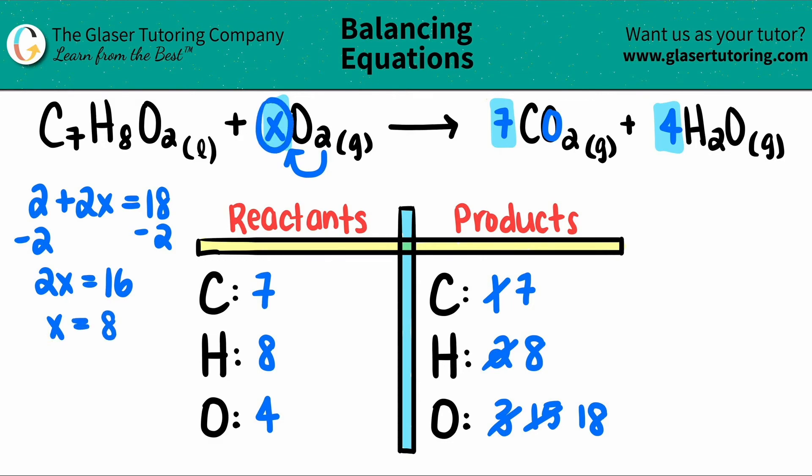That's the number that goes here. So if I just erase this and I put my new highlighter and I put an eight, now I have 16 plus two is 18. And now you're balanced on both sides.